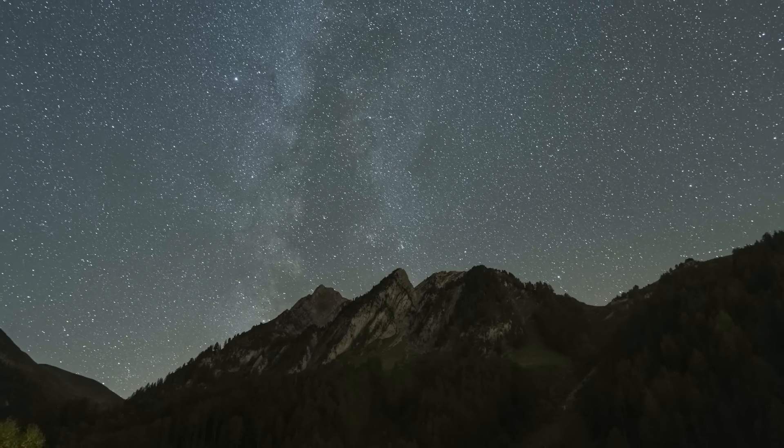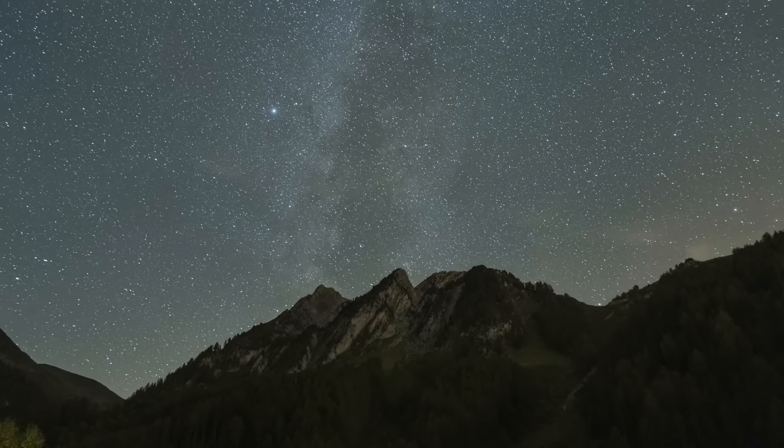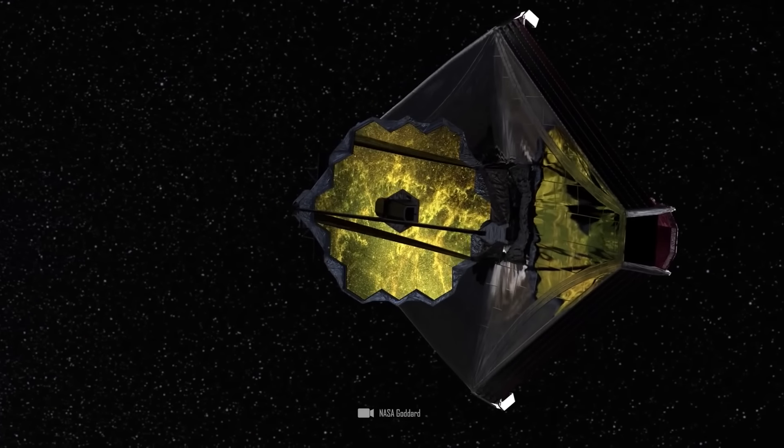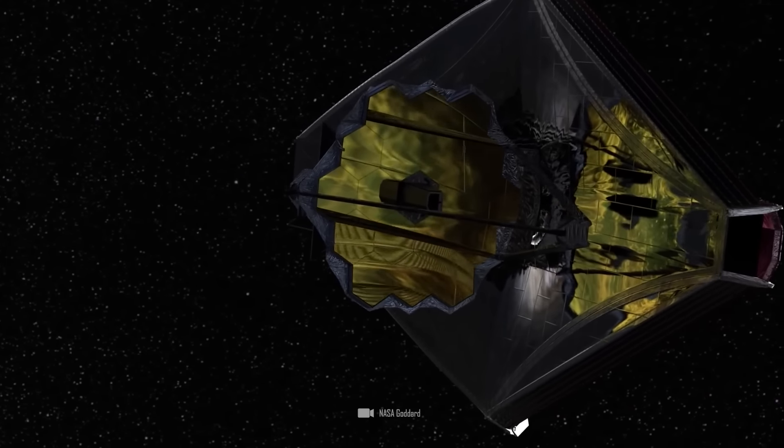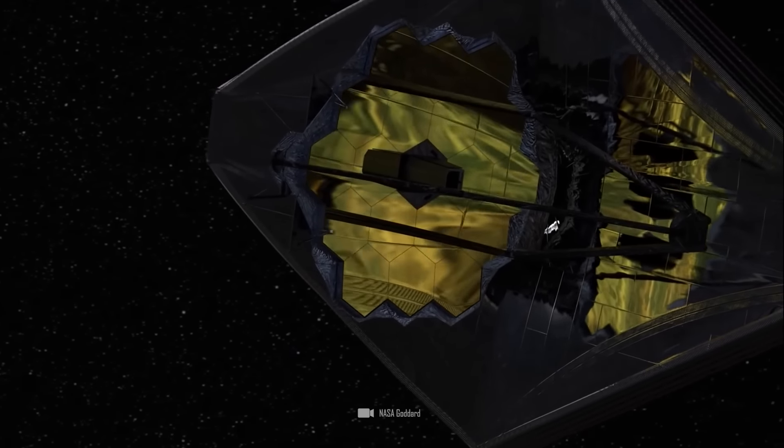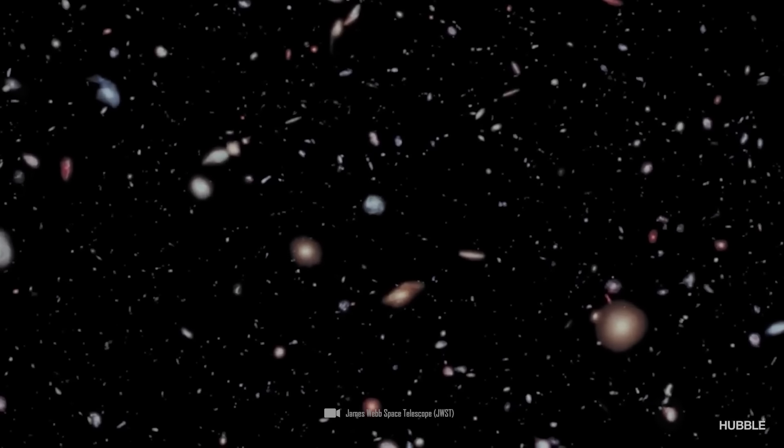With the naked eye, we can see very little here apart from a few beautiful color effects. However, the Webb telescope is able to analyze even the smallest point of light in detail.